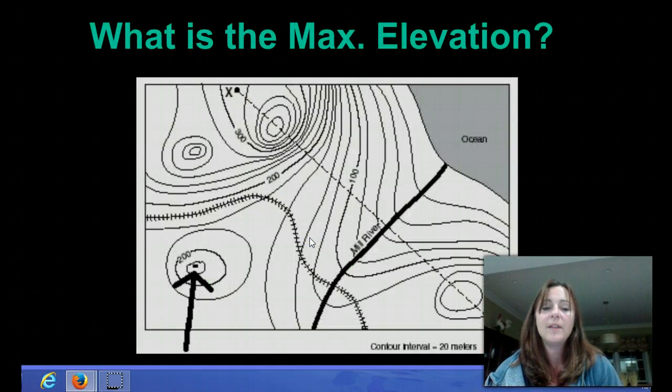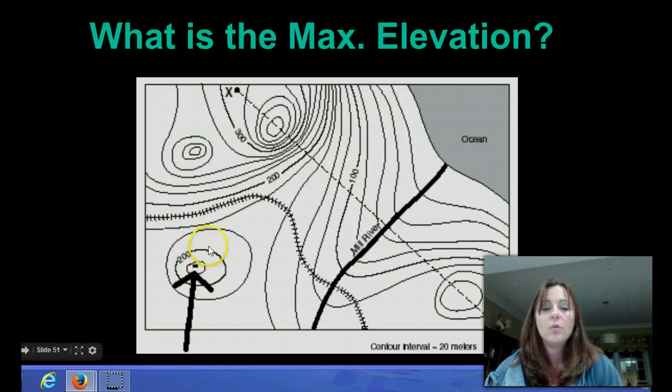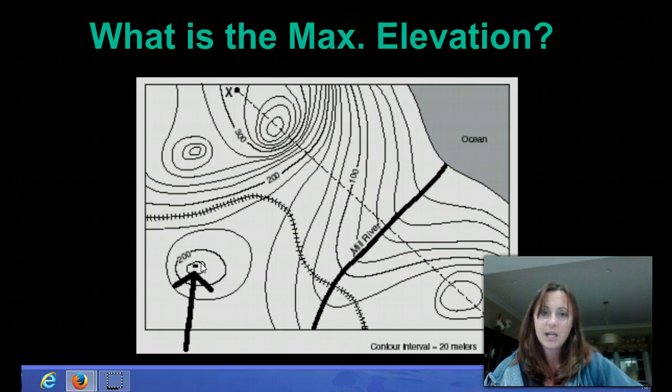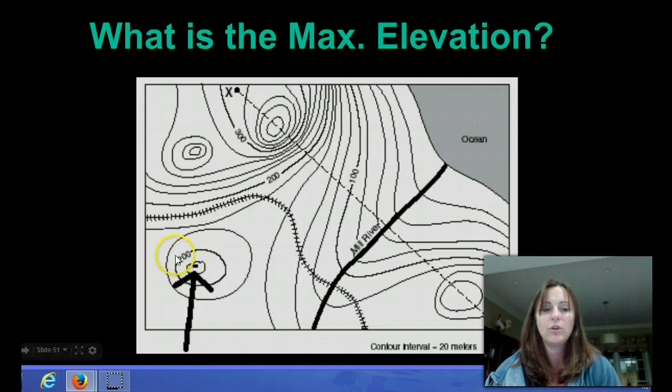What is the maximum elevation here? Well, we see that there is a contour interval of 20 meters. We see that the next highest is 200. Here's 220. So we would then say, what would be the next one? Well, it would be 240. So we subtract 1 from 240. We get 239. Our maximum elevation at this point would be 239.